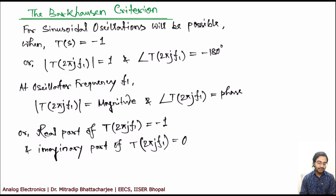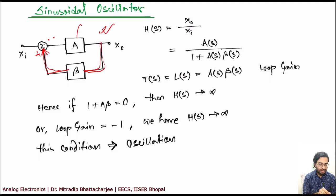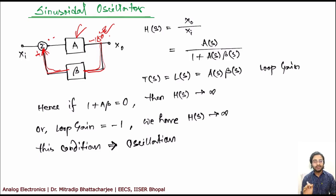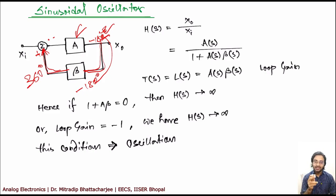Barkhausen's criteria states that the magnitude of the loop gain should be 1 and the phase should be minus 180 degrees. The amplifier gives minus 180 degrees, and you want another minus 180 degrees from the feedback network — in total 360 degrees, which is essentially zero degrees. So the feedback is a positive feedback, which keeps adding to the input.